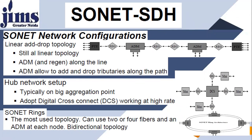The second configuration is linear add-drop topology. Apart from regenerators, ADMs are also used in this topology. ADMs and regenerators are used along the line, and ADMs allow adding and dropping tributaries along the path. The hub network setup is typically a big aggregation point that adopts digital cross-connects working at high speed. SONET rings are the most used topology. They can use two or four fibers with an ADM at each node. Each node uses one ADM — here we have four nodes and four ADMs — making this a bidirectional topology.